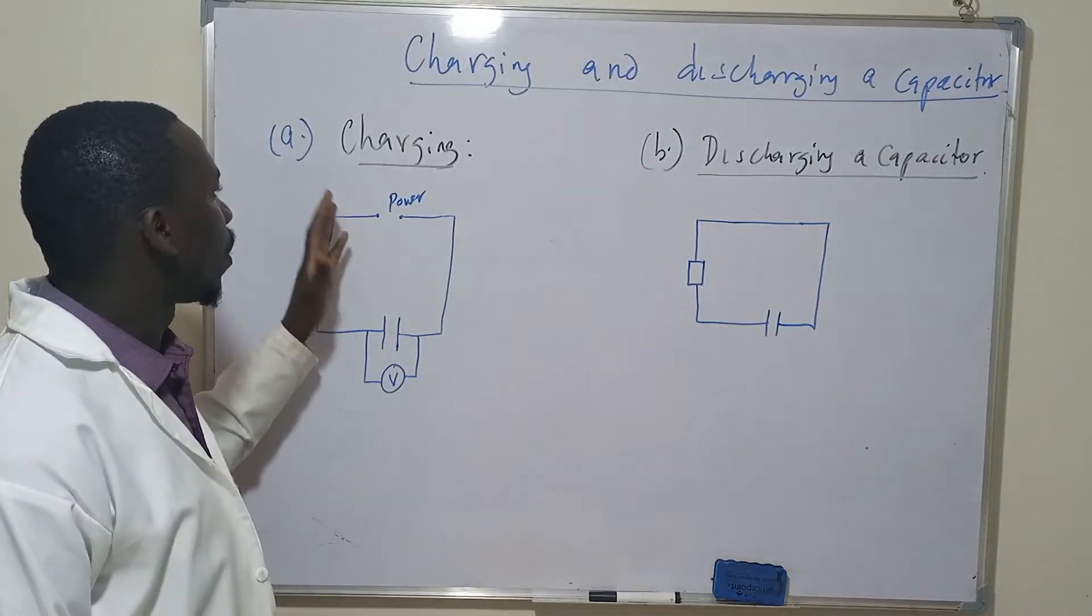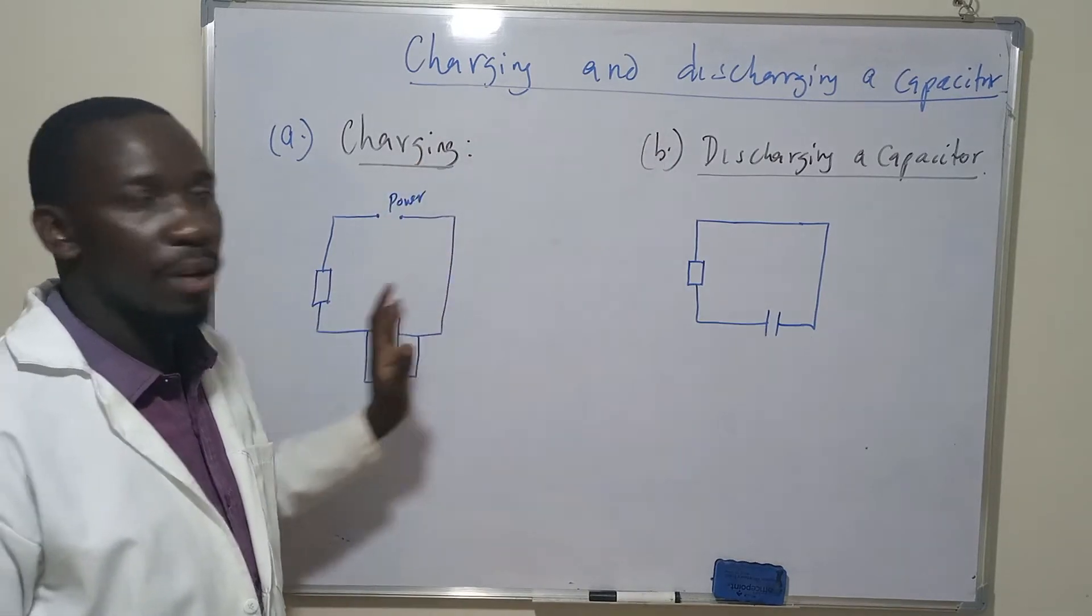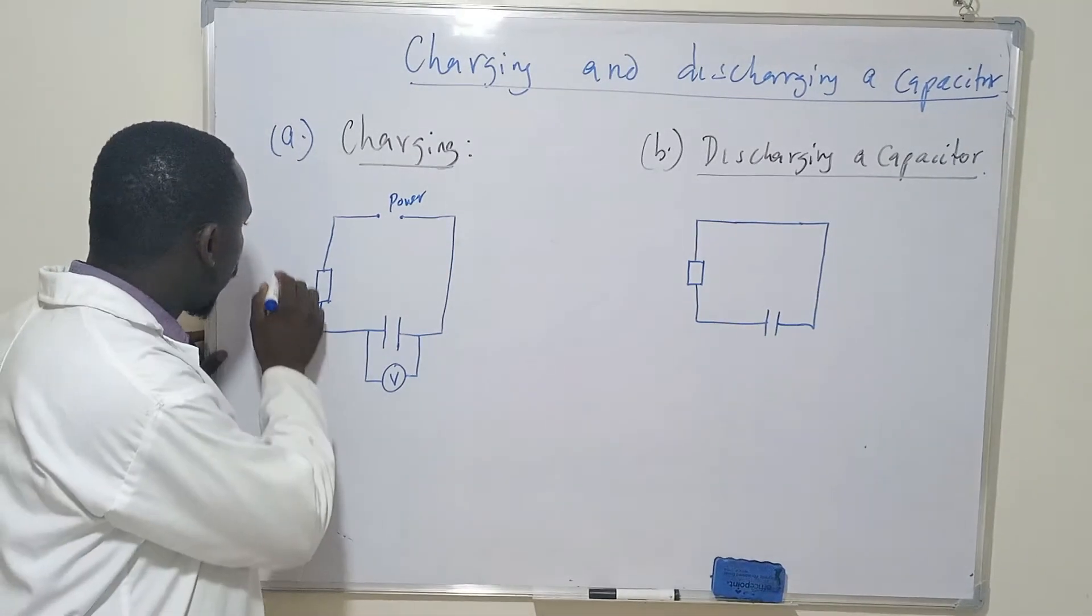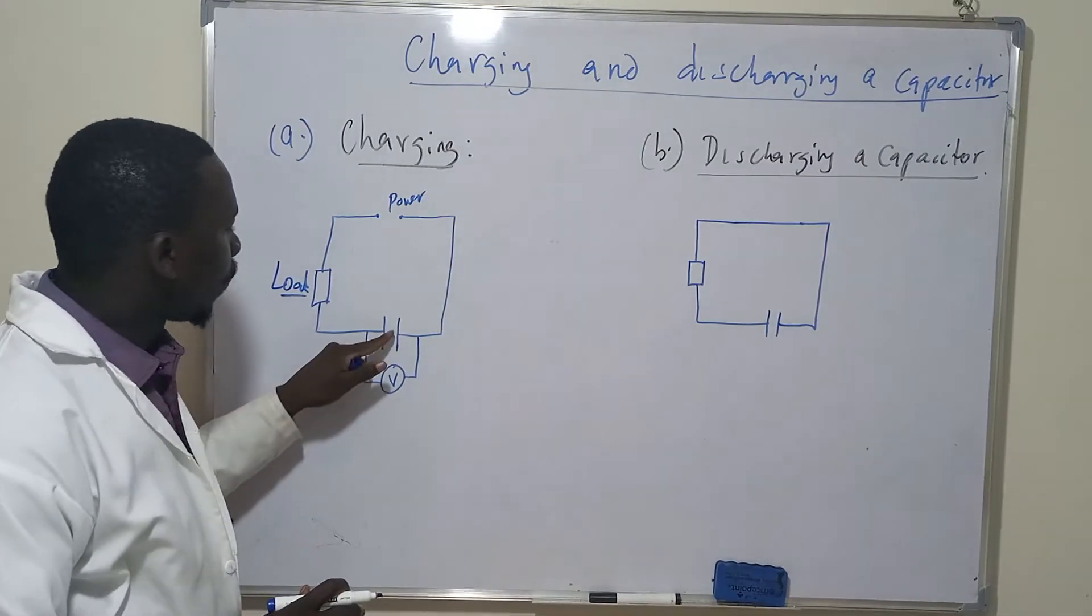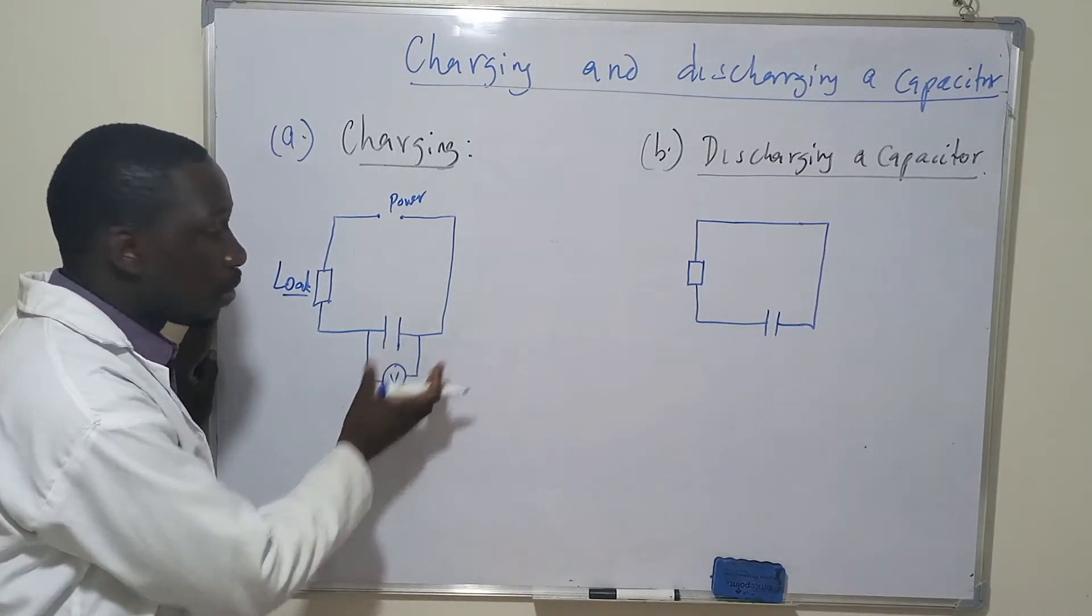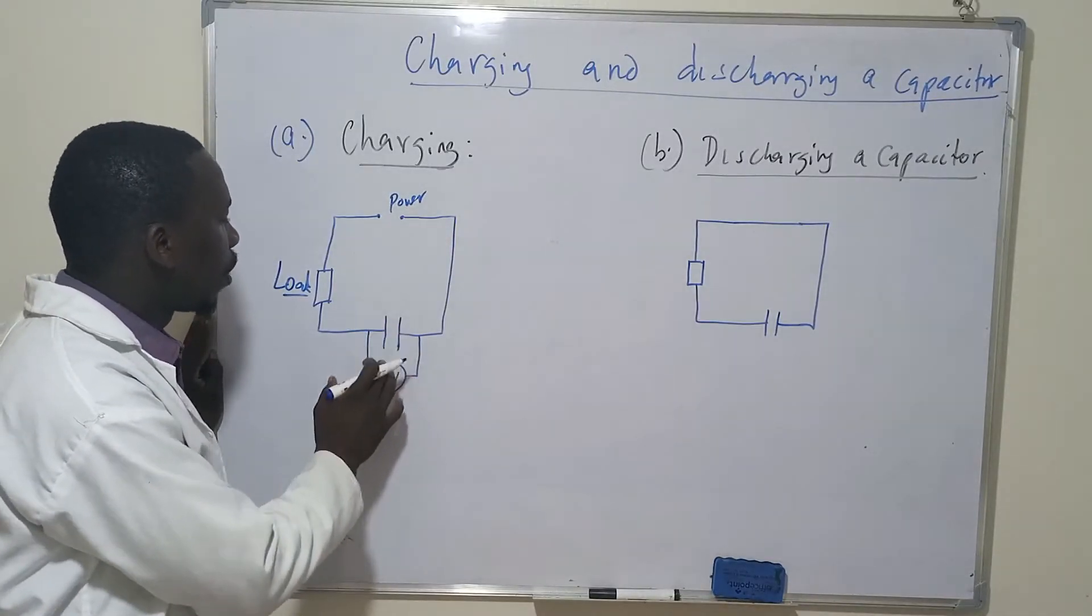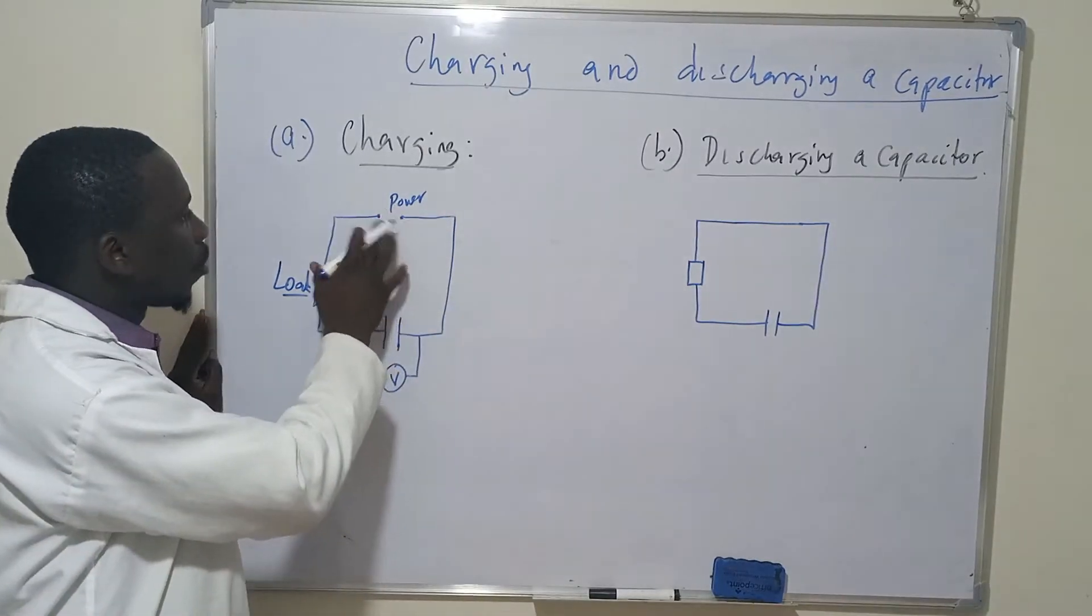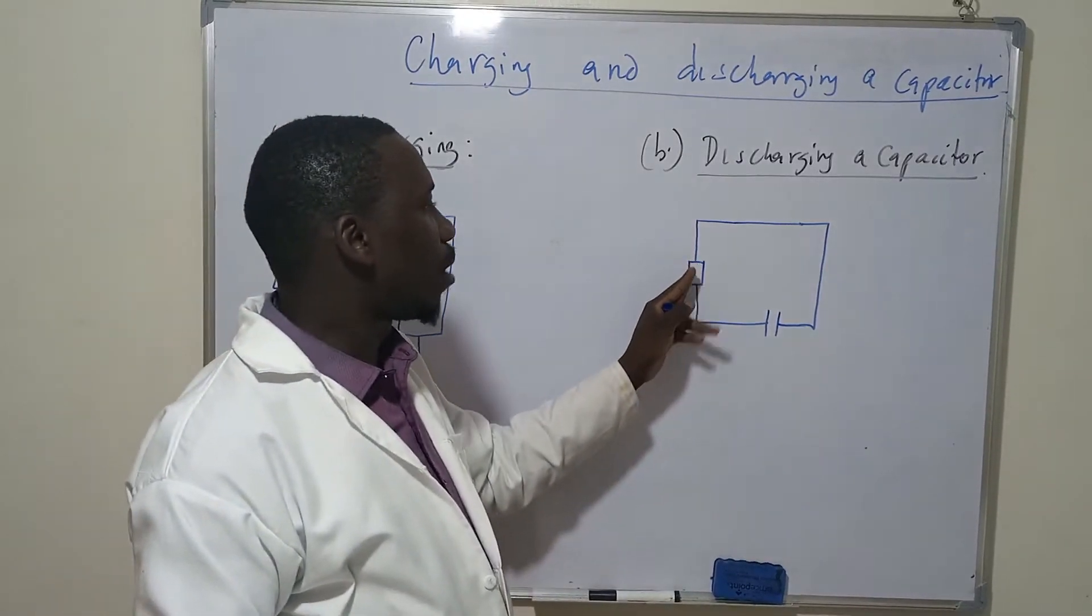This is the circuit we're going to use for charging a capacitor. We're going to look at charging and discharging a capacitor. The first part is charging. We're going to need a load. For this case, we're going to use a resistor, a fixed resistor here. This is the capacitor, and the voltmeter is going to be there to check on the voltage. Then we're going to have the power supply, and during the charging process, we're going to have the loading.